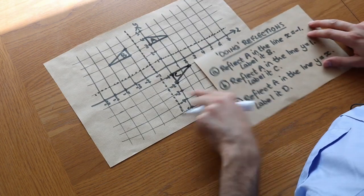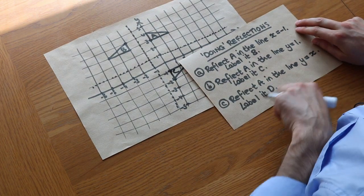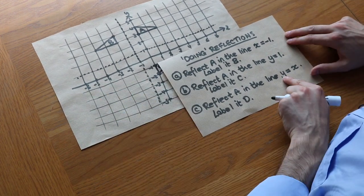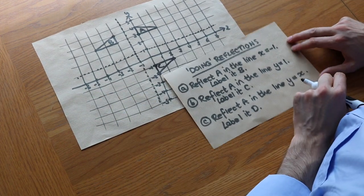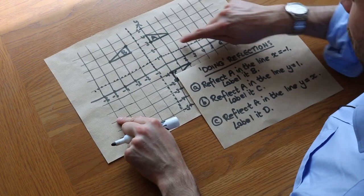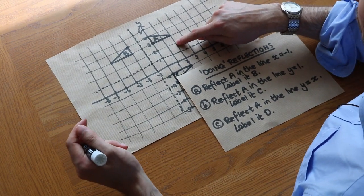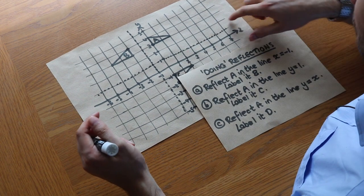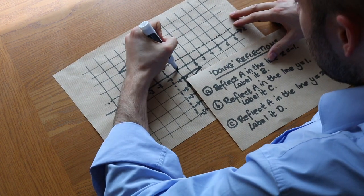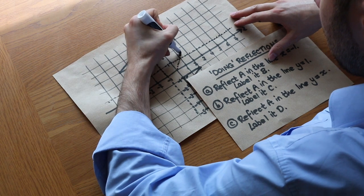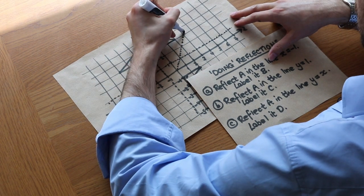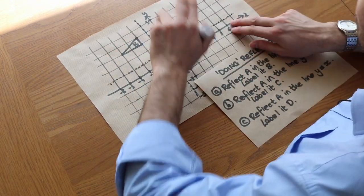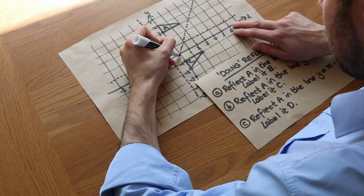Finally a slightly harder one: reflect A in the line y equals x, labelled D. We're looking for a line of points where the y value equals the x value — for example, two two, four four, zero zero all satisfy this. So it's going to be a diagonal line like this. Make sure it goes through five five — draw it properly, don't fudge the line.